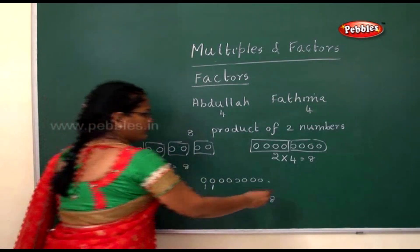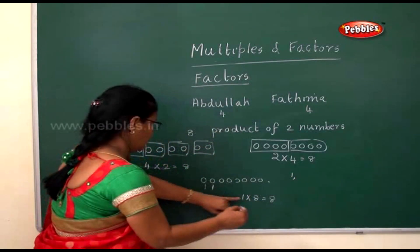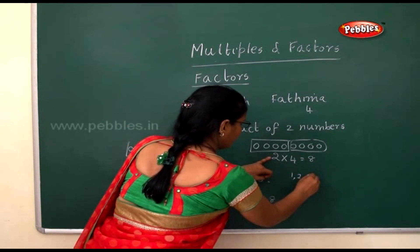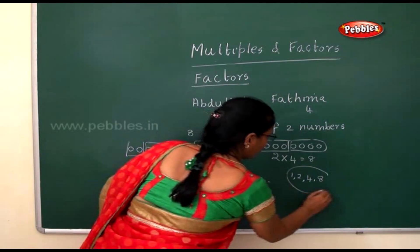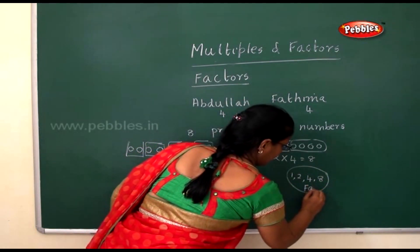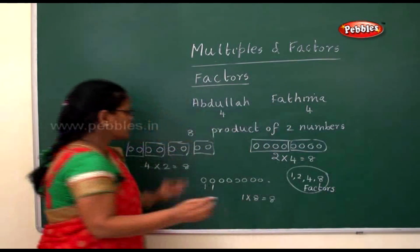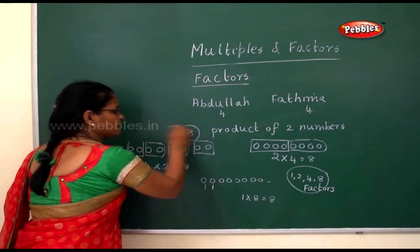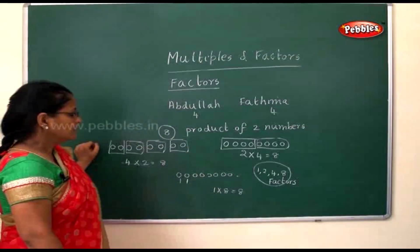So what are the factors for the number eight? They are one, two, four, and eight. These are all called the factors — the factors of the number eight.